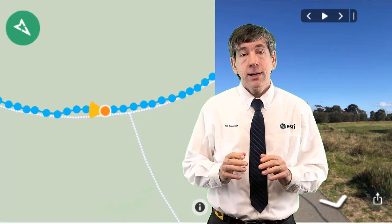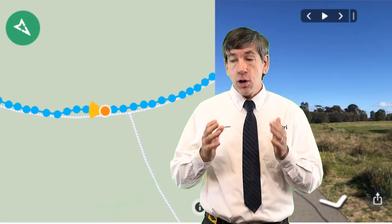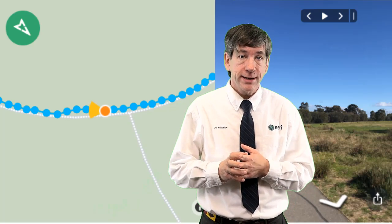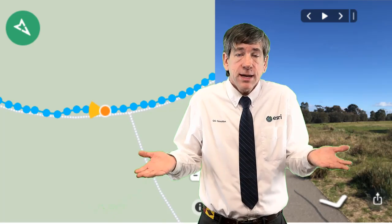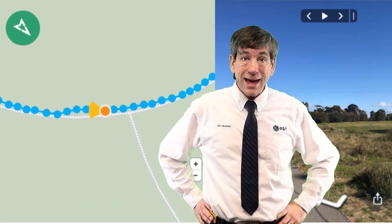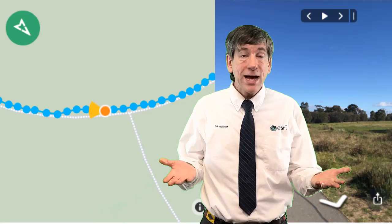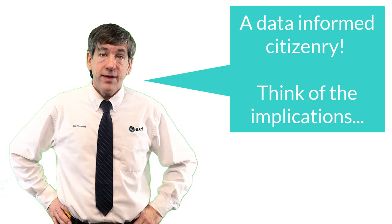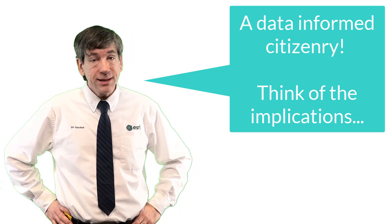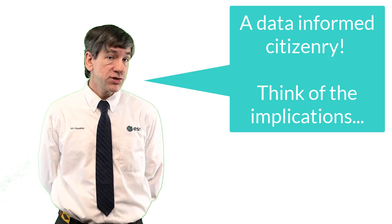Mapillary is part of the growing crowdsourcing citizen science movement which seeks to generate volunteer geographic information content from ordinary folks, ordinary citizens. In fact, Mapillary is helping to generate critical infrastructure and natural resources inventory in places around the world that have no national mapping agency or local GIS data. Mapillary is therefore helping to create a data-informed citizenry that can more effectively plan resilient, safe, and thriving communities.